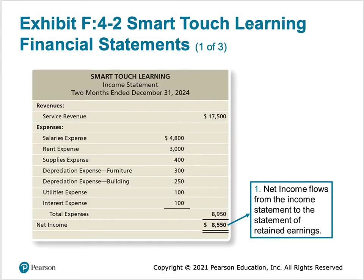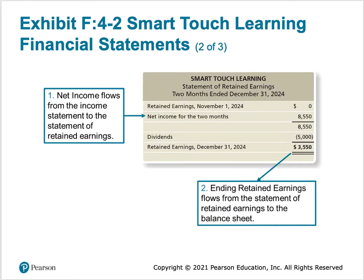These slides briefly show the financial statements again. We have revenues listed, then all expenses listed, to provide us with net income. That $8,550 is going to flow to our statement of retained earnings, which we see next.